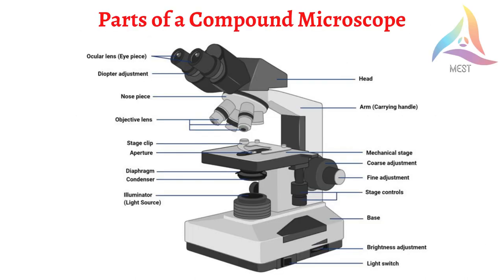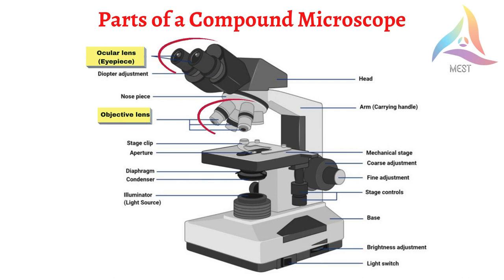There are many types of microscopes, and they may be classified in different ways. Let's start with the parts of a compound microscope. The compound microscope has two systems of lenses for greater magnification: the ocular lens that we look into, and the objective lens which is closest to the specimen that we want to observe.